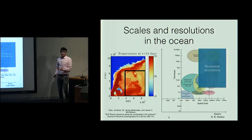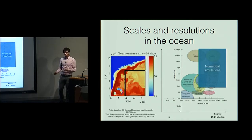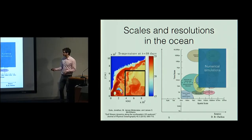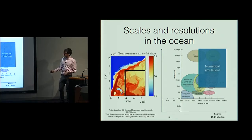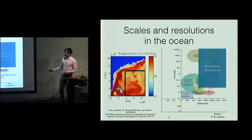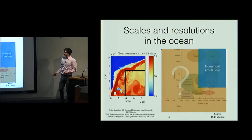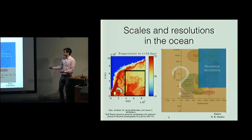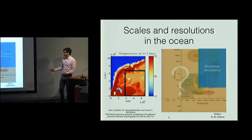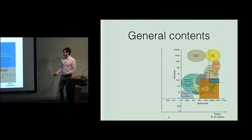We also have more accurate satellite images of temperature or salinity, but we have a lot of missing data due to clouds and sparsity in time. Numerical simulations are also more and more accurate but still don't fill all the scales — for instance, the Gulf Stream near the US coast with good resolution still misses many small-scale features. So what can we do?